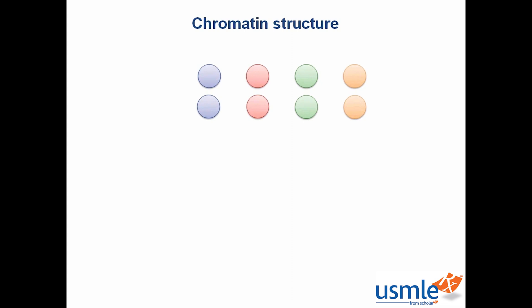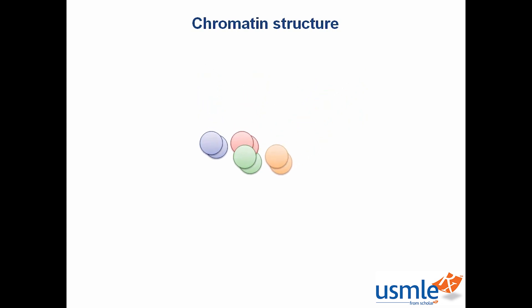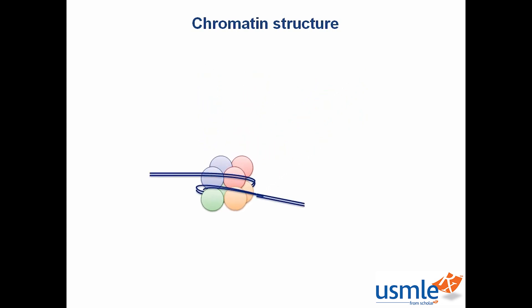By coiling the DNA around proteins called histones, which are shown here. There are a few different types of histones, called H2A, H2B, H3, and H4. These aggregate together, and DNA wraps around them twice to form a nucleosome. There's one more type of histone, called H1, which is not in the nucleosome, but along the DNA that links nucleosomes together.